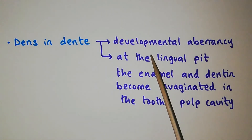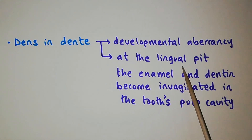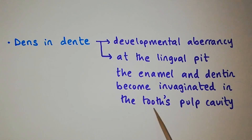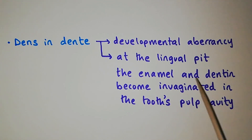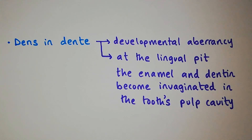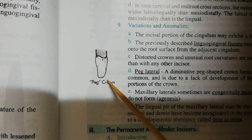Dens in denti is a developmental aberrancy. In this condition, at the lingual pit, the enamel and dentine become invaginated into the tooth pulp cavity, as a result of which the lingual pit becomes the site of entrance. In this diagram, you can see that this is a peg-shaped crown.